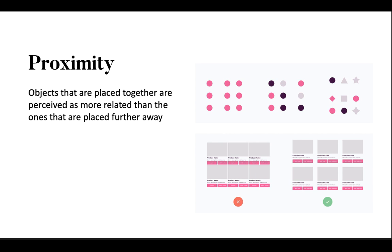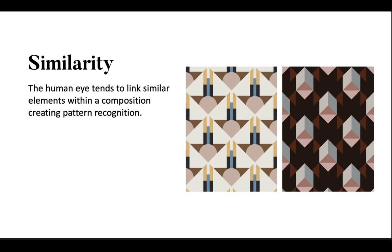Similarity principle states that the human eye tends to link similar elements within a composition. This is the grouping element of pattern recognition. Utilizing patterns in design is a powerful element in the design world and should not be overlooked. By grouping elements by color, shape, or even similar spacing, you can help your viewer perceive your design more effectively.